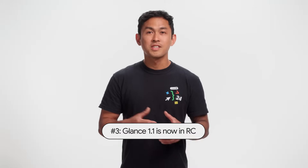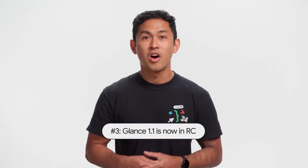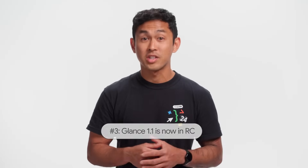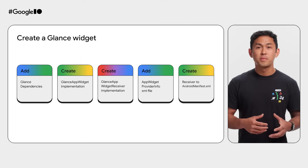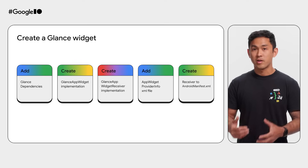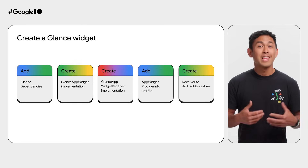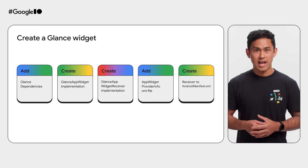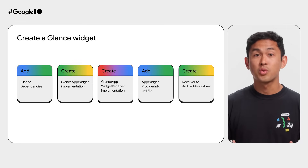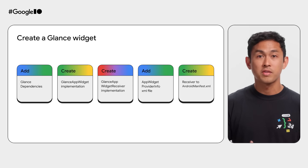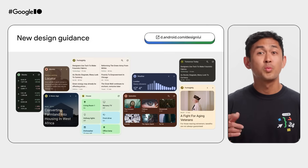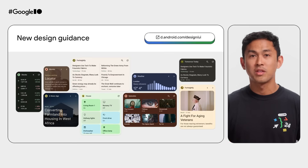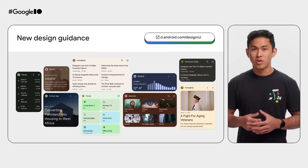And lastly, Glance 1.1 — our modern recommended framework for building widgets — is now in stable release. Glance builds on top of Jetpack Compose, allowing you to use the same declarative syntax that you're used to. With Glance, you create glanceable parts of your app through widgets that your users can interact with directly on their home screen.